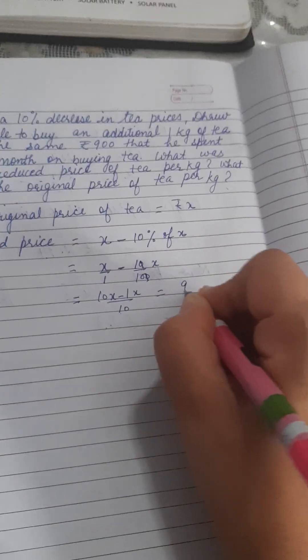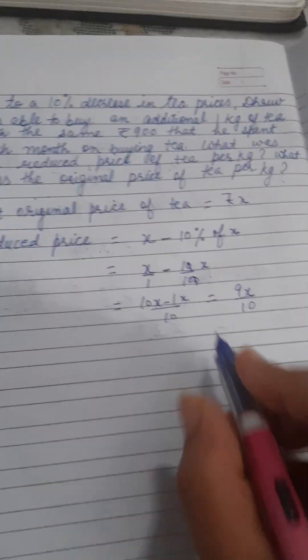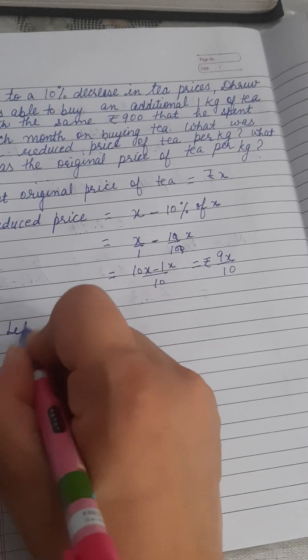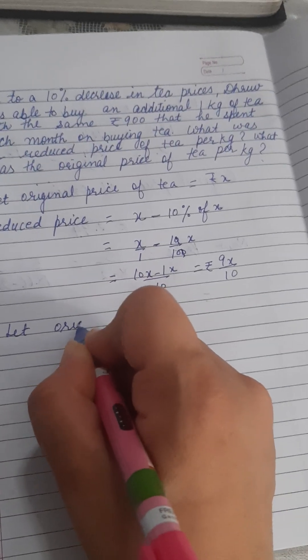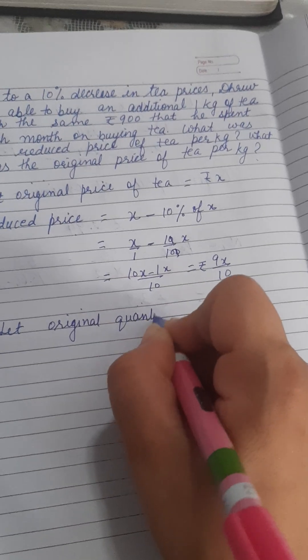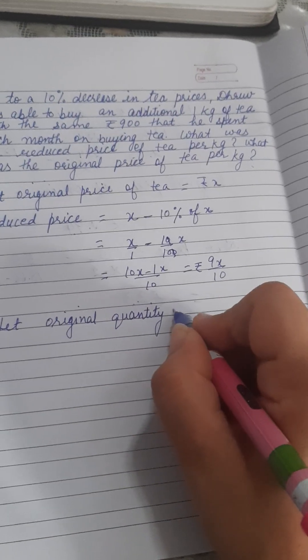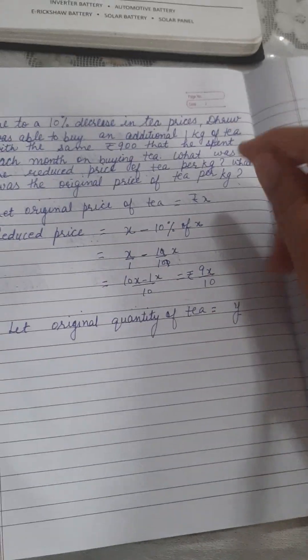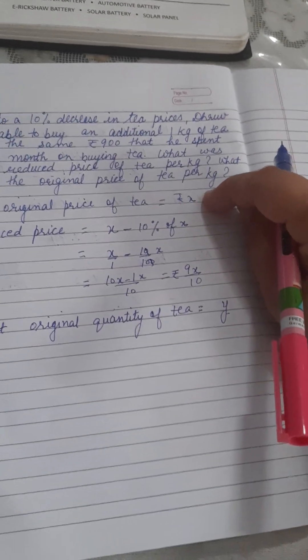That is 9X by 10. This is the reduced price. Right, now let us suppose the quantity of tea is, original quantity of tea is Y. Take another variable. The price of tea was rupees X.